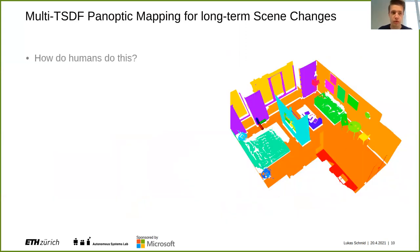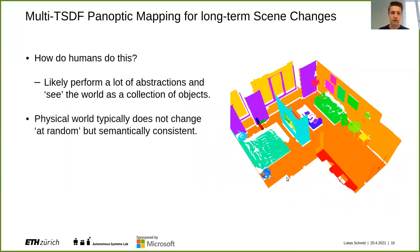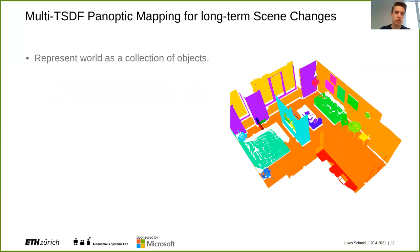How do we approach this problem? We took inspiration from how humans manage temporal changes, since we are very good at it. Based on recent findings in neurology, we highly likely perform a lot of abstraction and see the world as a collection of objects, which makes sense since it's much easier to reason about a few objects than a dense surface. This also makes sense because the physical world typically does not change at random — not voxel by voxel — but in a semantically consistent way, meaning entire objects such as chairs or rigid parts thereof are moved or removed. This is the foundation for our approach: can we also represent the world as a collection of objects in a robotic context?